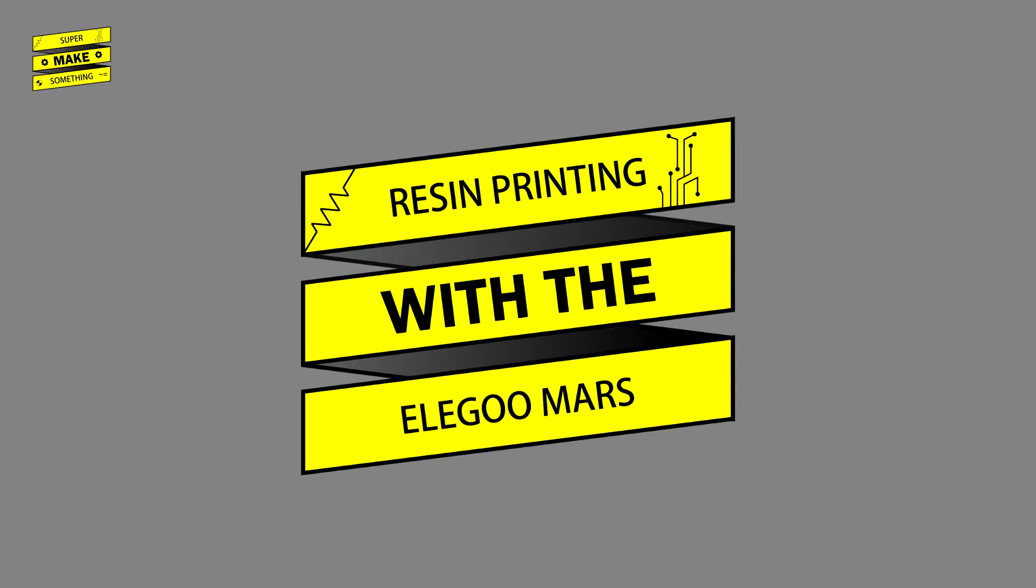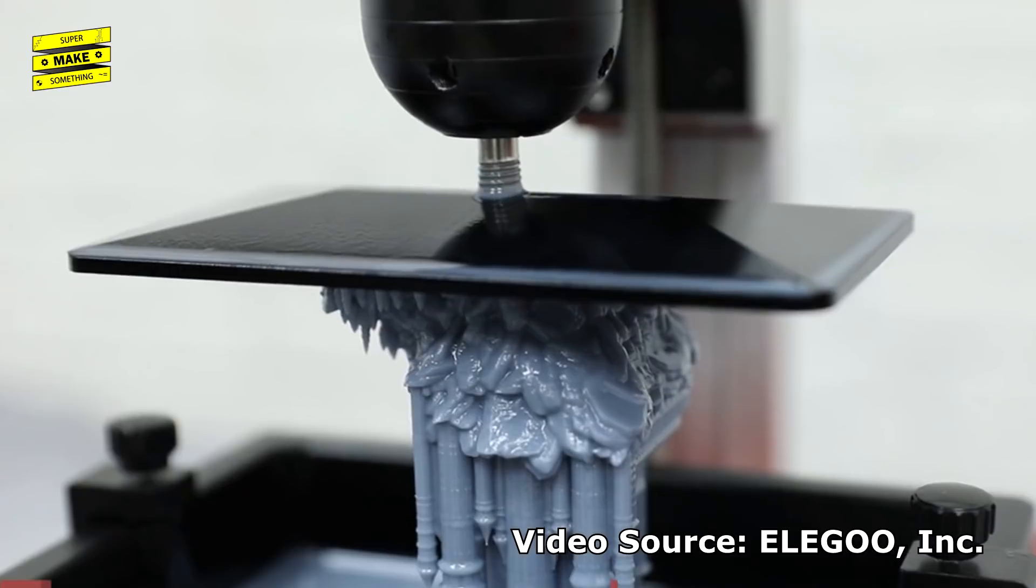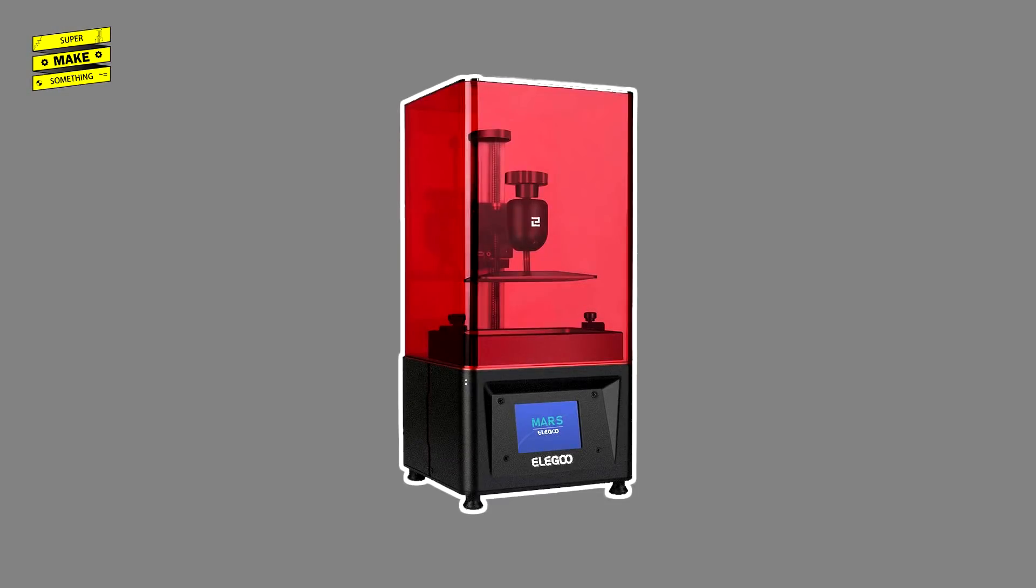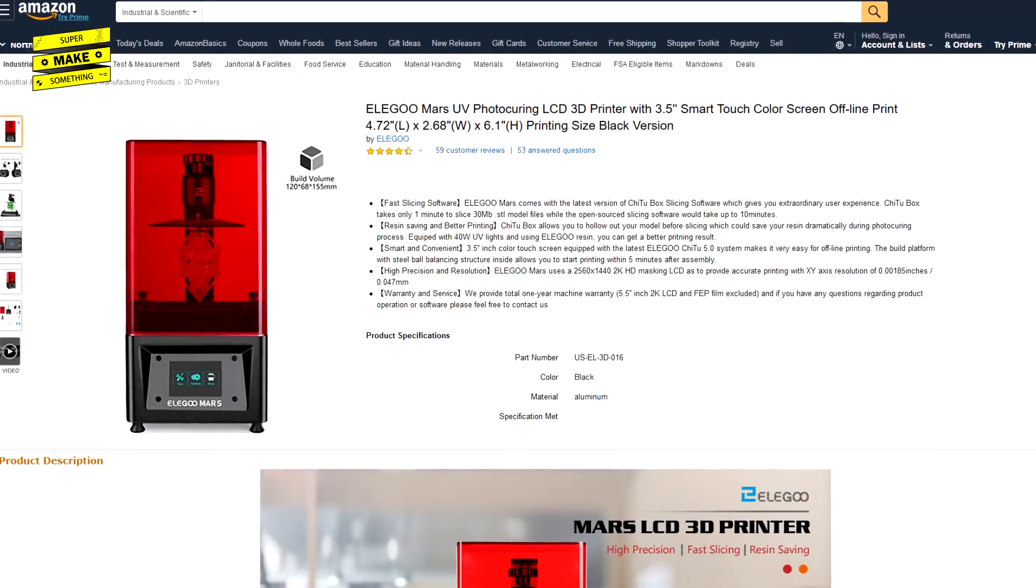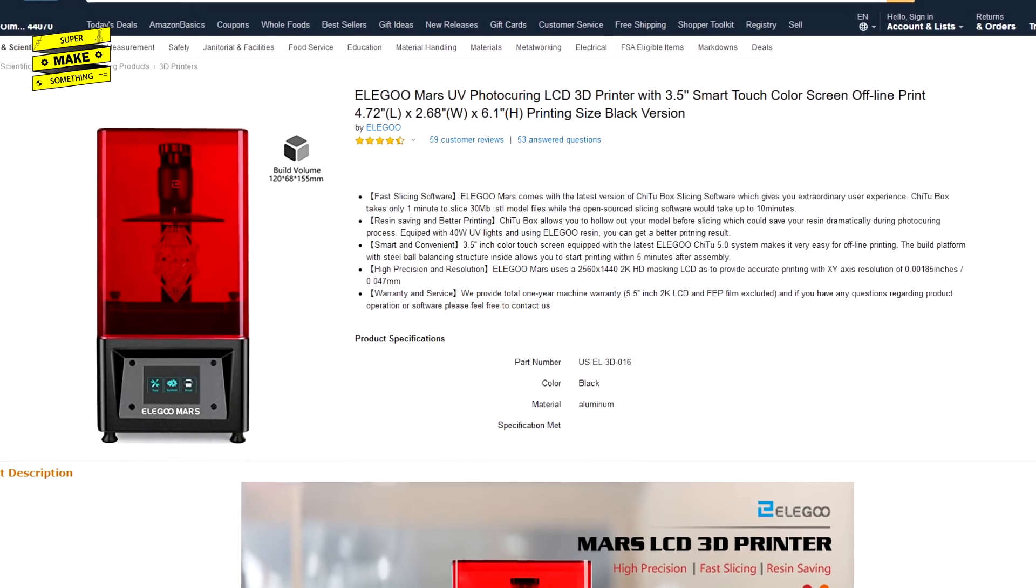Compared to FDM methods, the process to create resin prints is a bit different. To explore this process further, and to see the difference between FDM and resin printing firsthand, Elegoo Inc. was kind enough to send me one of their Mars LCD MSLA printers to make this video. The unit has 120 by 68 by 155 millimeter build volume and is available now.